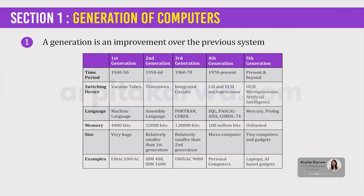You will now see a table on the screen. There is too much information here but you need to only focus on the rows I am telling you about. These are generation, switching device, language and examples.